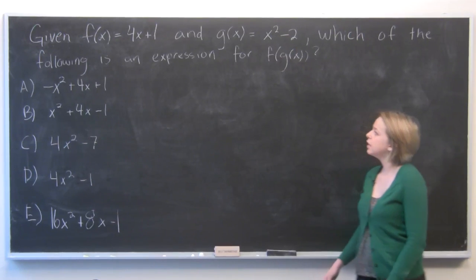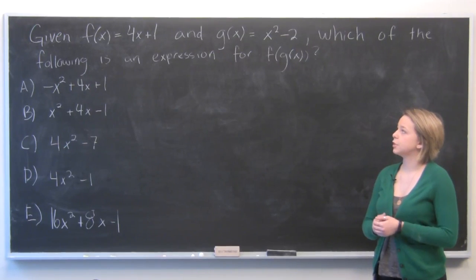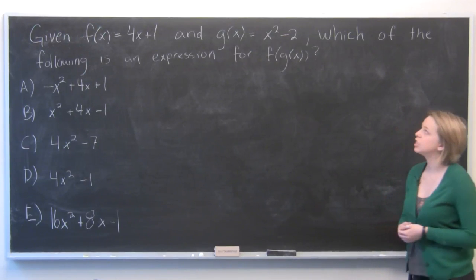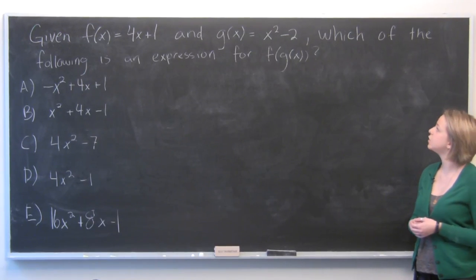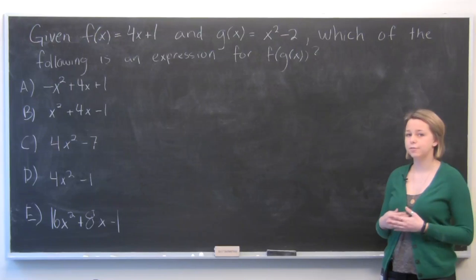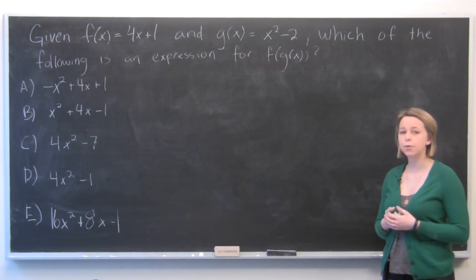So our question here says, given f equals 4x plus 1 and g equals x squared minus 2, which of the following is an expression for f of g of x? So let's write down what we know.